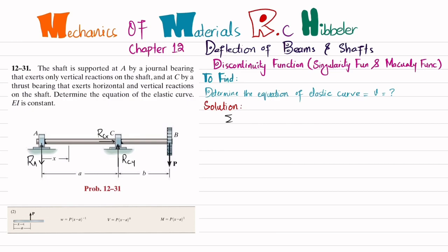The first equation of equilibrium: sum of all forces along the X direction must equal zero, with forces to the right taken as positive. Only one horizontal force, Rcx, is acting, so Rcx equals zero.